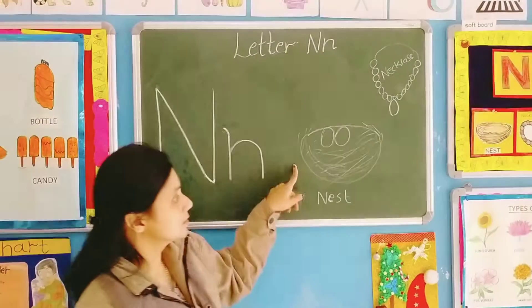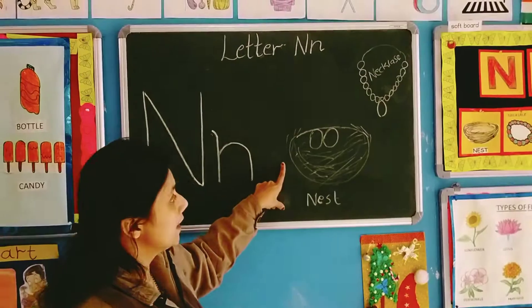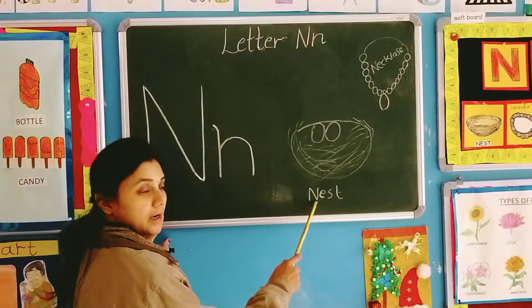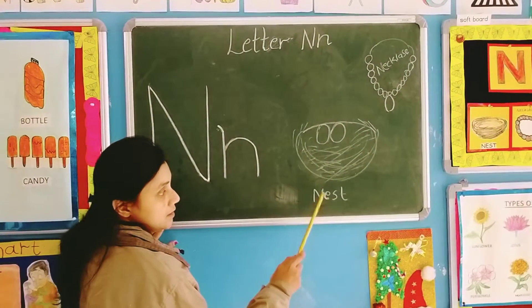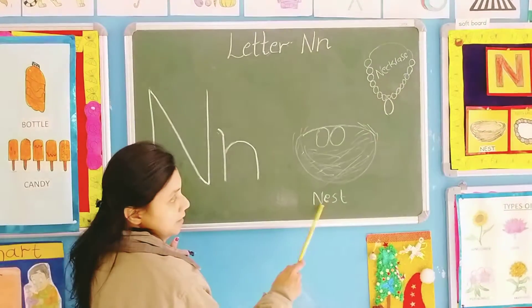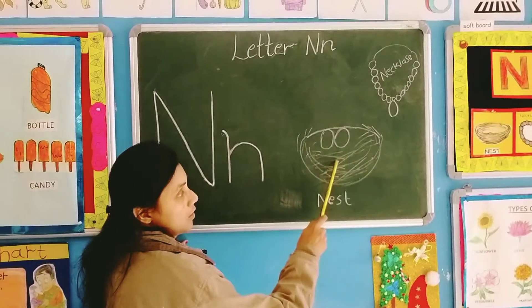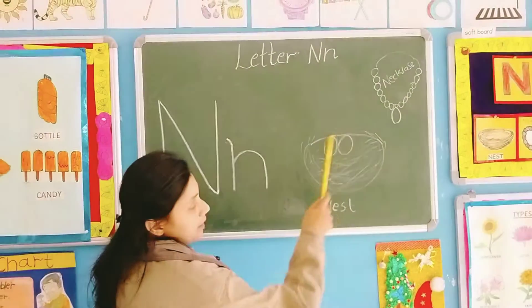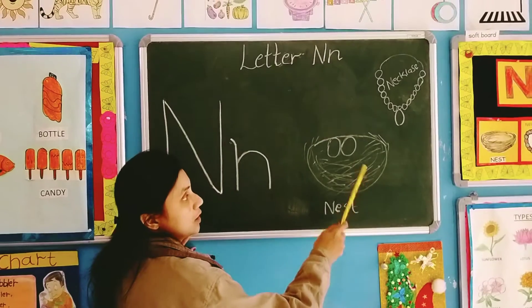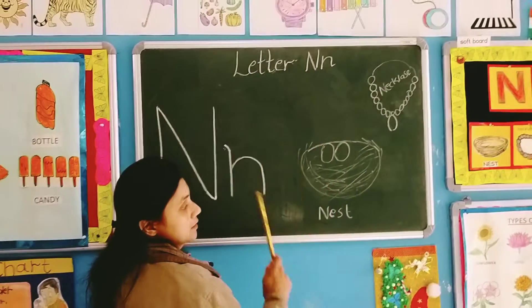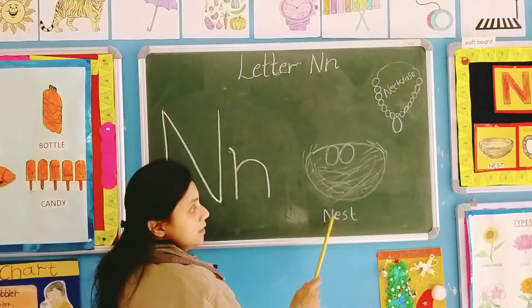Now look at this. Kya hai? This is a nest. N for nest. Agar dekha hai nahi bota chhi bachyo, chudi honka, yaap e ate rakti hai — N, nest.